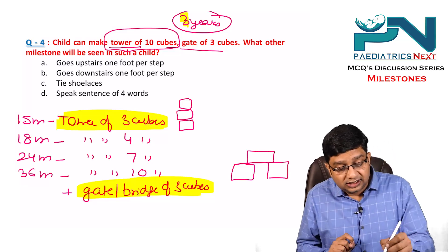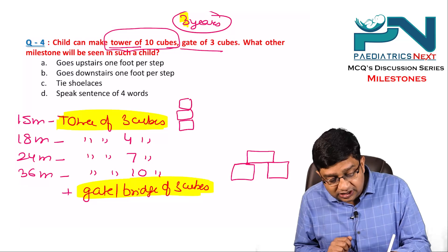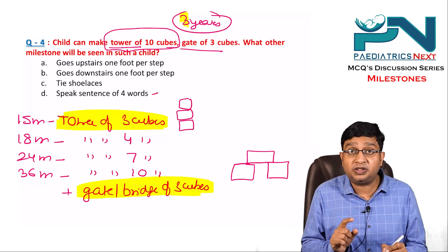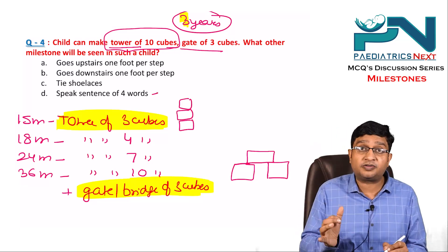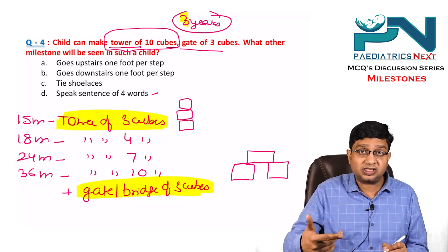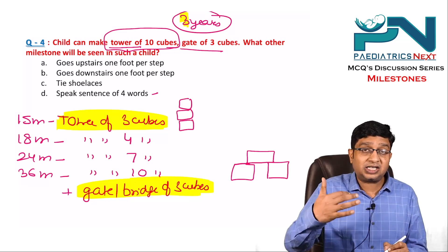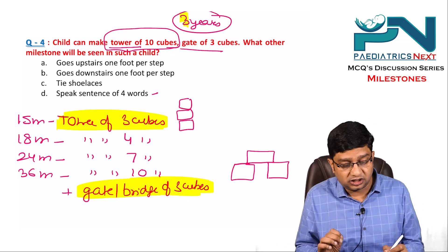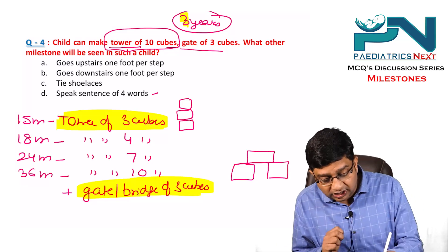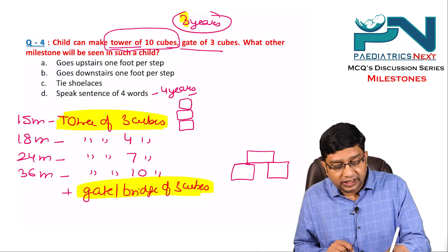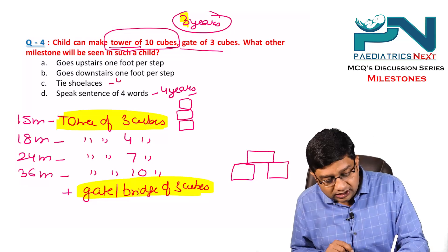Now at three years, which milestone would the child have? Speaking a sentence of four words applies to four-year-olds. By the rule of thumb from two to five years, a child speaks sentences of words equal to their age in years — so four words means age four. Tying shoelaces is also at four years.